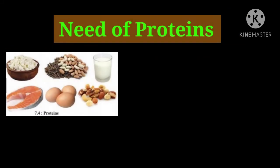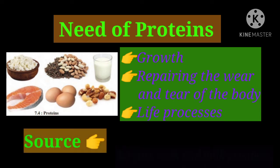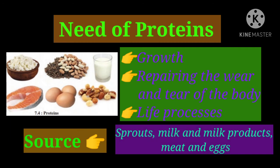Proteins: we need proteins for the purpose of growth, repairing the wear and tear of the body, and for other life processes. We get proteins from sprouts, milk and milk products, meat, and eggs in our food.